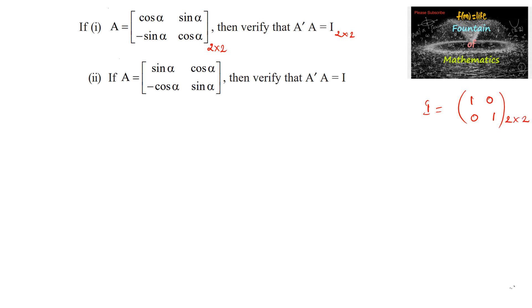Let us find the transpose of the matrix. A transpose is equal to interchanging the rows and columns of matrix A, so we can write cos alpha, minus sin alpha — the first column will become the first row and the second column will become the second row — that is sin alpha and cos alpha.